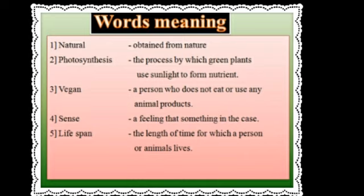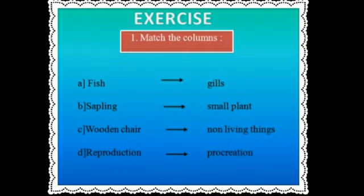Now we start the next section. First, fill up your test book and then write in your classwork. First one: match the columns. Fish — fish breathe through their gills, so it matches with gills. Second: sapling — sapling means a small plant, so it matches with small plant. Third: wooden chair — it is a non-living thing. Fourth: reproduction — it matches with procreation.